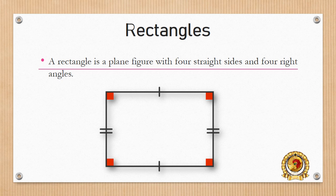Rectangles. A rectangle is a plane figure with 4 straight sides and 4 right angles, like you can see in the picture below.